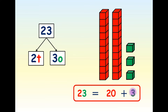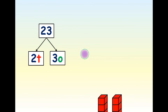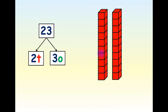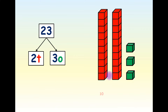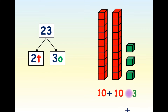We can look at it in another way. Instead of combining the two tens, we can keep them separated. We know the value of 2 tens is 20, but we also know that there are 2 tens. So we can add it like this: 10 plus 10 gives us 20, plus 3 equals 23.